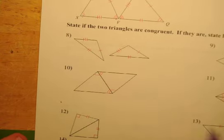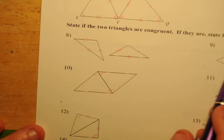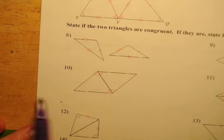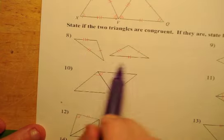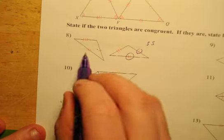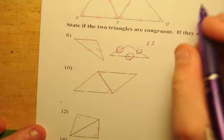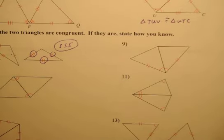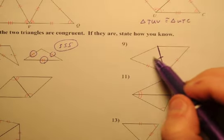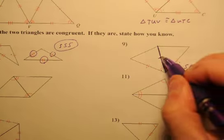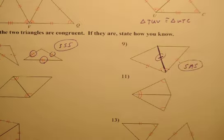State if the two triangles are congruent and say how you know. Don't say they look congruent — you've got to give evidence. For problem eight, these two triangles have one side, two sides, three sides marked — so they're congruent by Side-Side-Side. For number nine, this shared side is not marked but it is congruent because it's shared. We've got one set of sides, one set of angles, and another set of sides — so Side-Angle-Side.